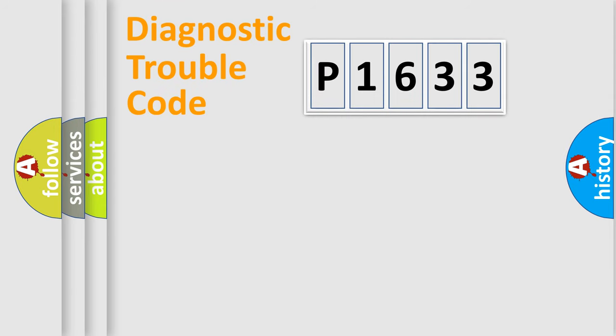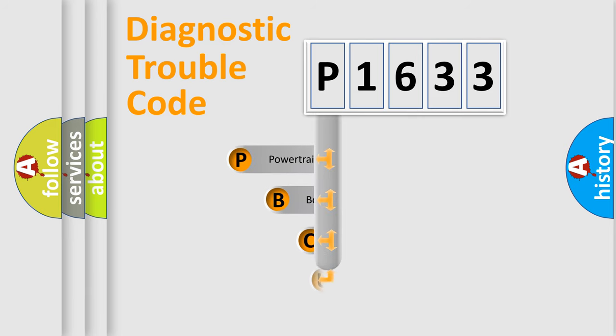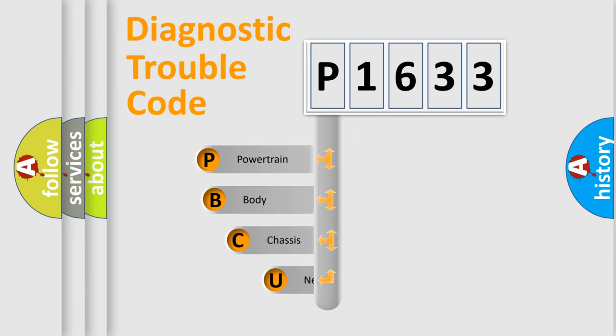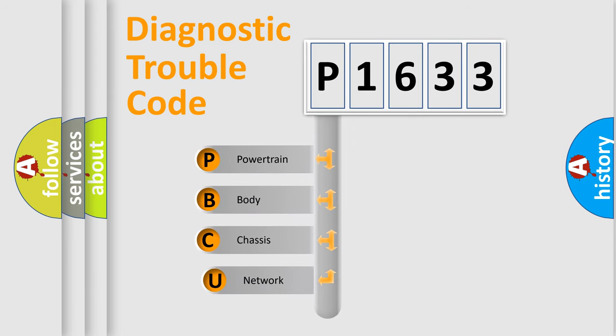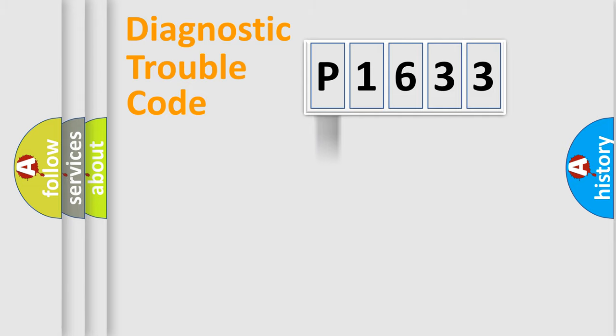Let's do this. First, let's look at the history of diagnostic fault code composition according to the OBD2 protocol, which is unified for all automakers since 2000. We divide the electric system of automobile into four basic units: Powertrain, Body, Chassis, and Network.